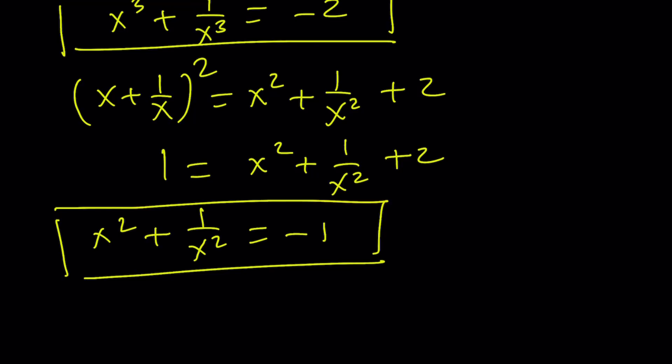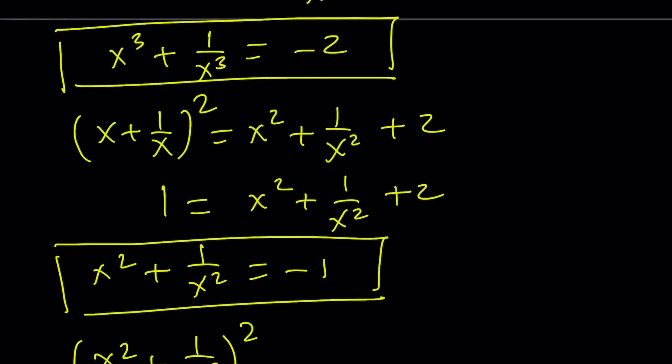So we got those two values. What am I going to do with that, right? I'm going to take x^2 + 1/x^2 and square it one more time. Now, let me tell you what my goal is. I got x^3 + 1/x^3, and I want to get x^4 + 1/x^4.